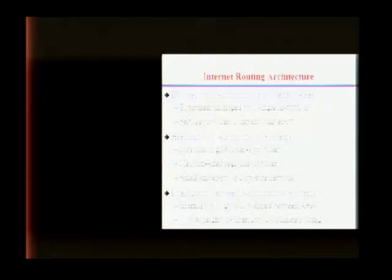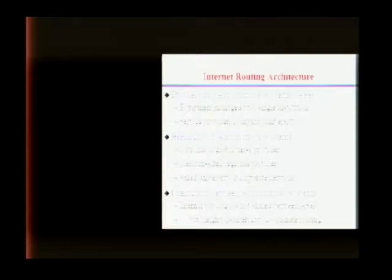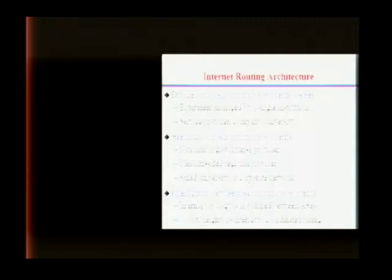At a high level, the internet consists of around 20,000 or so autonomous systems. These are basically collections of routers and links run by a single institution — could be a large service provider like AT&T, a small company, or a university like Rutgers or Princeton. There's a hierarchy: a small number of tier-one providers at the top with national or international scope, medium-sized regional providers, and at the edge a lot of universities and corporate networks — around a dozen to 20 tier-one providers and maybe 15,000 edge networks.